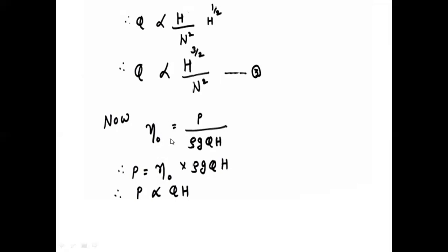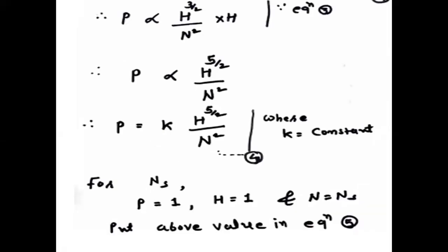The overall efficiency of a turbine is: η_o = P / (ρgQH), so P = η_o · ρg · Q · H. Since η_o, ρ, and g are constant, P ∝ Q·H. Substituting equation 3, P ∝ (H^(3/2) / N²) · H = H^(5/2) / N². To remove proportionality, P = k · H^(5/2) / N² — this is equation 4, where k is constant.